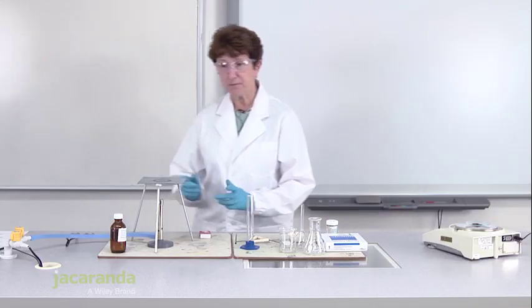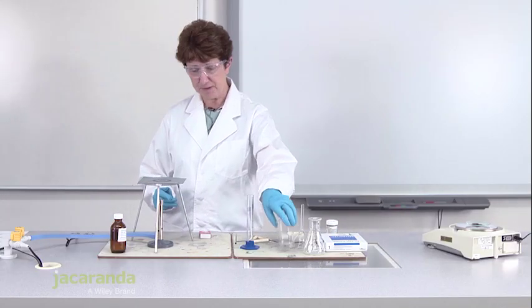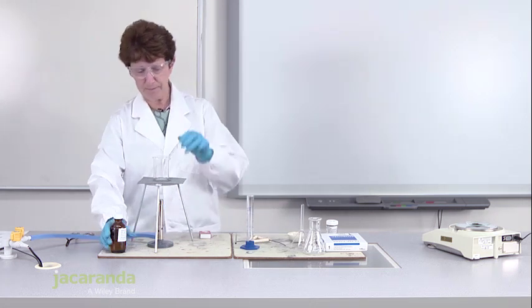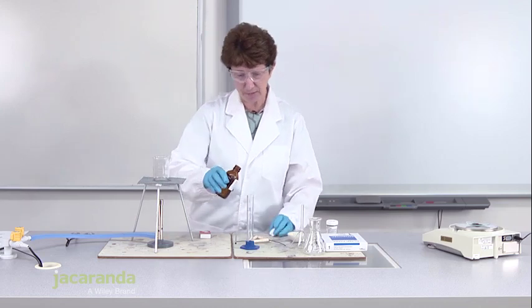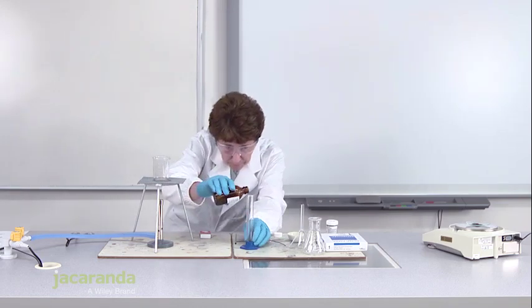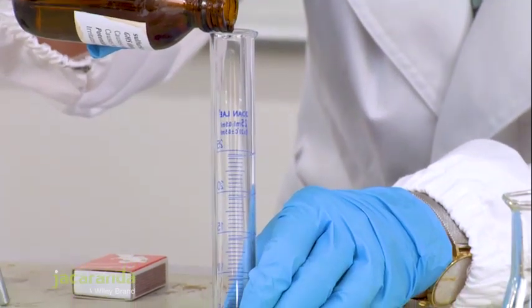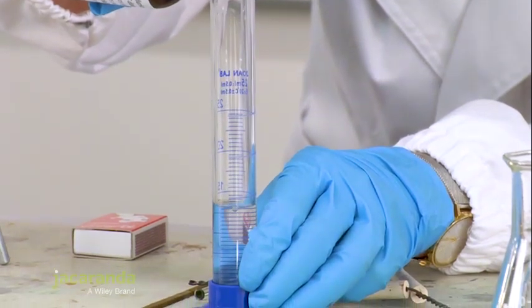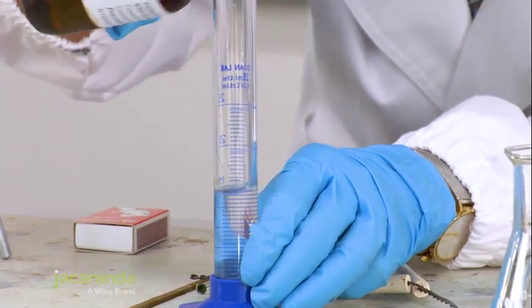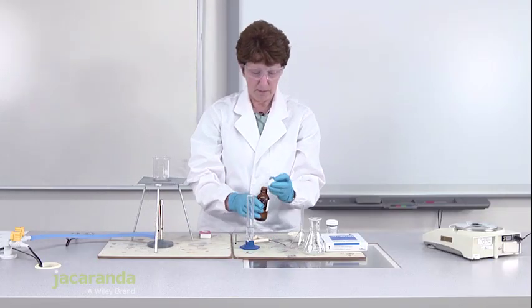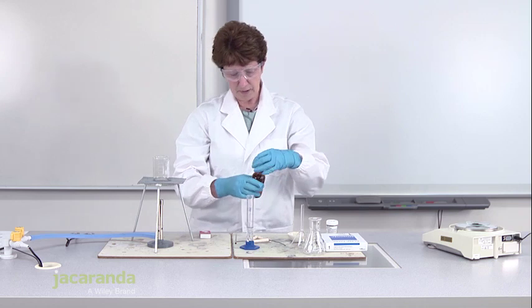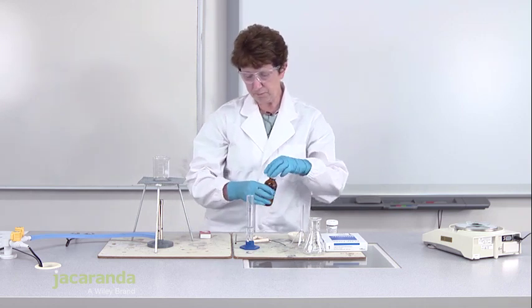Copper oxide is going to react with some sulphuric acid so I need 20ml of sulphuric acid which I'm going to warm up. I'm going to measure the 20ml of the sulphuric acid in my graduated cylinder and then pour that into a 100ml beaker.